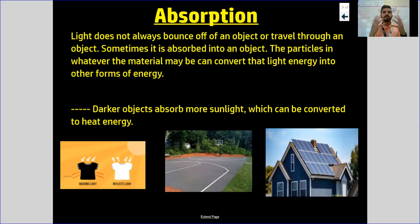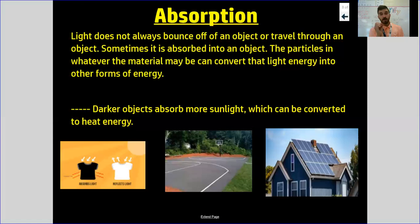Where we kind of left off is once light leaves its source — I like to use the sun as my example most of the time, which is a natural source of light. When that light comes off of the sun, those light waves travel and they do certain things. The first thing we talked about is when they hit a smooth or shiny surface, they are able to bounce off or reflect into our eyes.